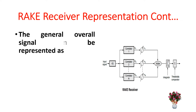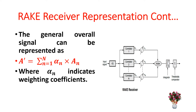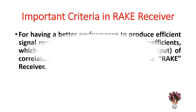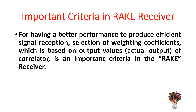The general overall signal can be represented as: the sum of alpha-n into capital A-n, where alpha-n indicates the weighting coefficients. For having better performance to produce efficient signal reception, selection of weighting coefficients based on output values — that is, the actual output of the correlator — is an important criteria in the rake receiver.